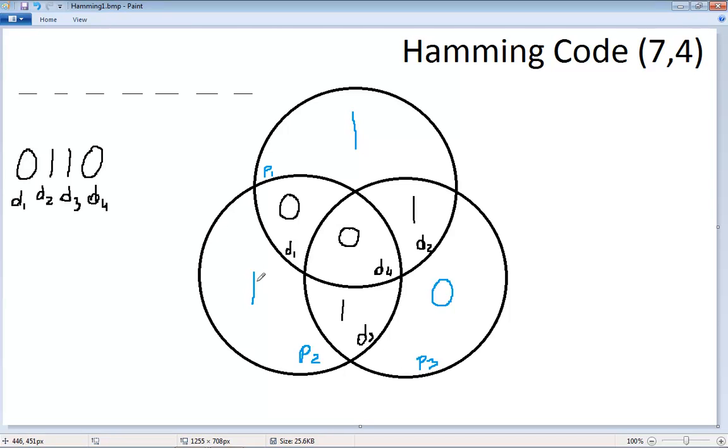In just a minute, we'll see what happens if an error creeps in and how this system protects its data. But for now, let's write out this code in the Hamming code sequence. First, we start with parity 1 space, which has a 1. Then parity 2, which has a 1. Then the first data piece, which is 0. Then the third parity, which is also 0. Then the second data piece, which is 1, the third data piece, which is 1, and the fourth data piece, which is 0.